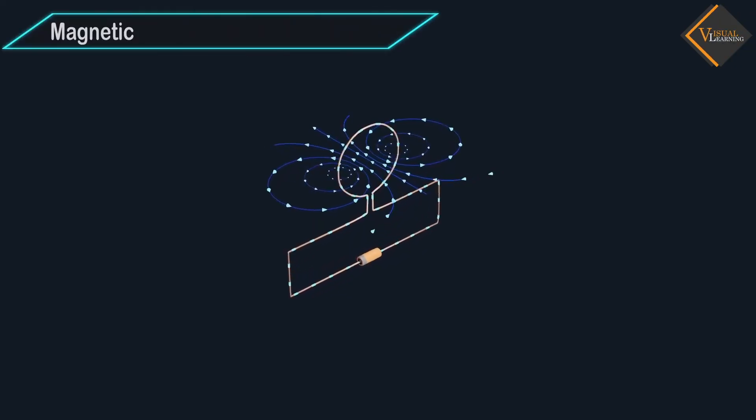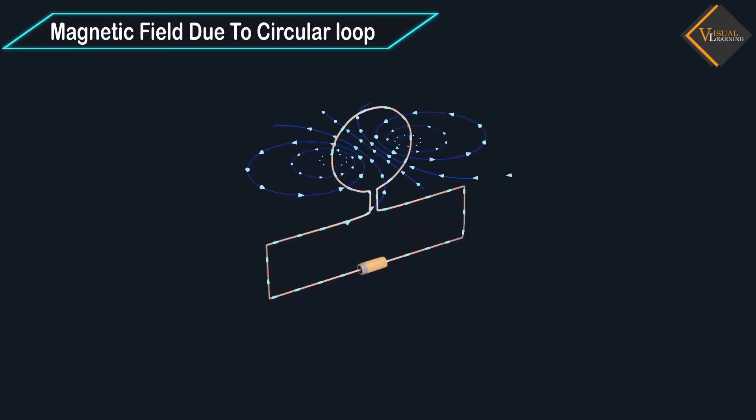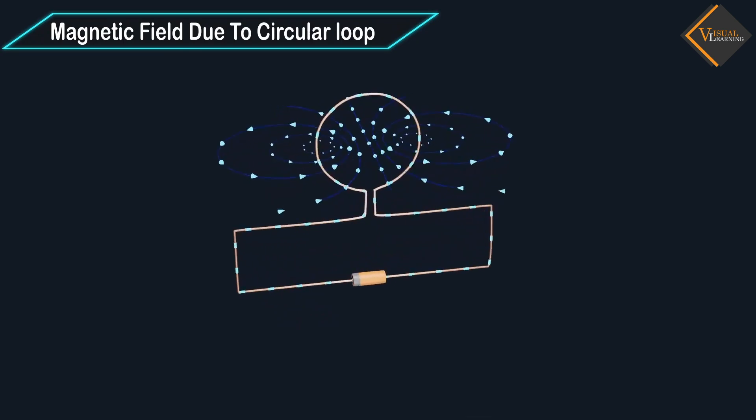In this video, we will understand how magnetic field occurs due to a current carrying circular loop.